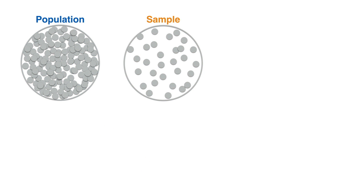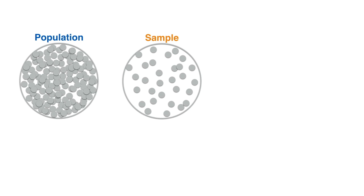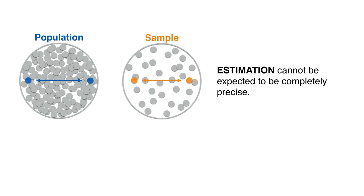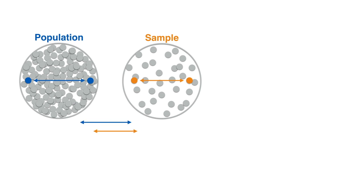As we are not working with all the elements of a population, the estimation cannot be expected to be completely precise. Hence an error will be present. In this case, the dispersion of a population elements will be underestimated by the sample.